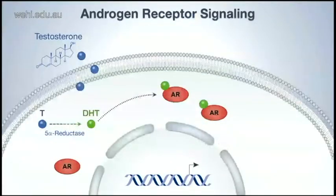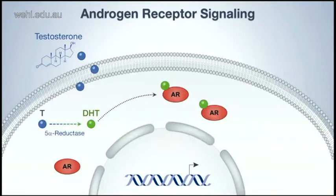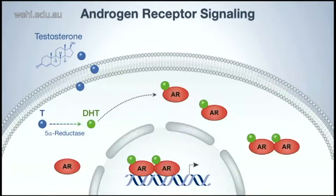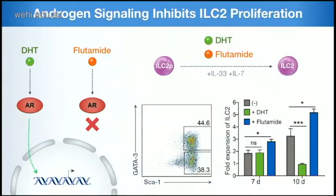How does androgen receptor signaling work? Androgen receptors are ligand-inducible transcription factors. Testosterone can diffuse through membranes and reach the cytosol where the androgen receptors are. Testosterone is converted to dihydrotestosterone (DHT), the bioactive form recognized by the receptor. The receptor then dimerizes and translocates into the nucleus, where it regulates the expression of target genes. Because if you don't have the ligand, it's like having a knockout — you don't mediate this effect. So we could test by activating or blocking the androgen receptor to see what happened to ILC2 proliferation.